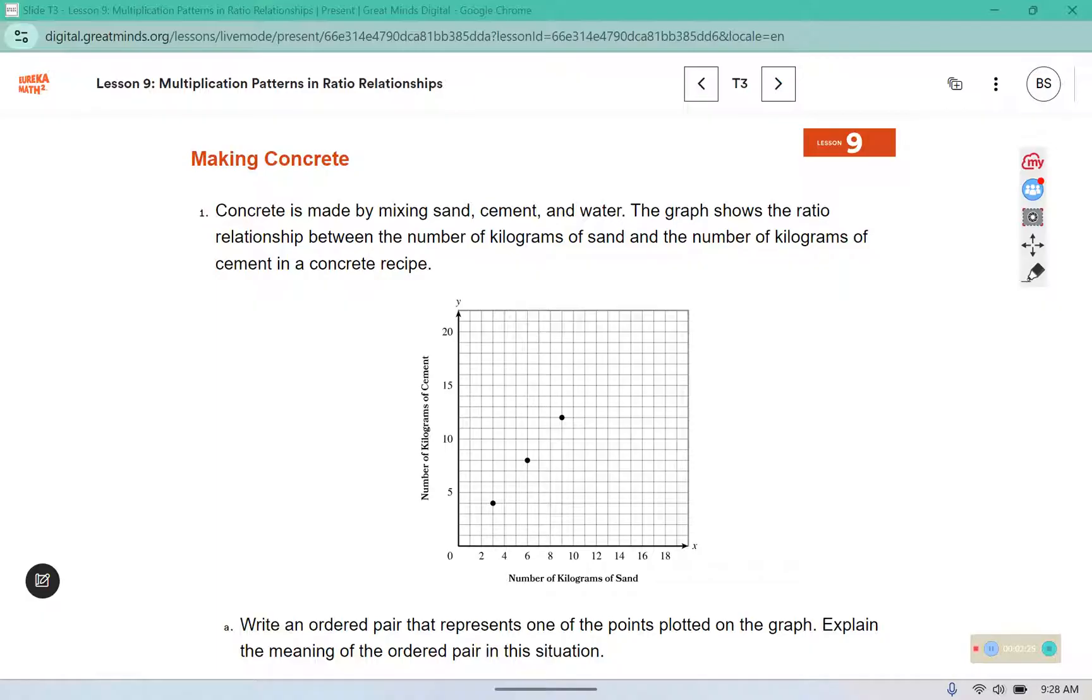In part A, we are to write an ordered pair, meaning coordinates for a point, that represents one of the points plotted on the graph. Explain the meaning of the ordered pair in this situation.